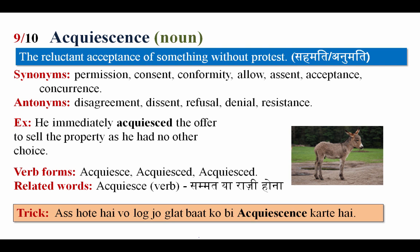The next word is acquiescence. The meaning of acquiescence is reluctant acceptance of something without protest — sehmati ya anumati, kisi cheez ki sehmati karna, without protest ke, chahey woh sahih ho ya galat. Synonyms: permission, consent, conformity, allow, assent, acceptance, concurrence. Antonyms: disagreement, dissent, refusal, denial, resistance. Example: He immediately acquiesced to the offer to sell the property as he had no other choice. Word forms: acquiesce, acquiesced. Related word: acquiescence.